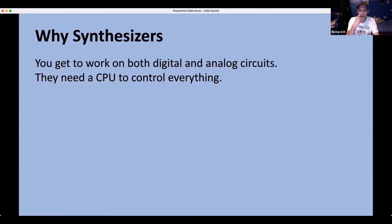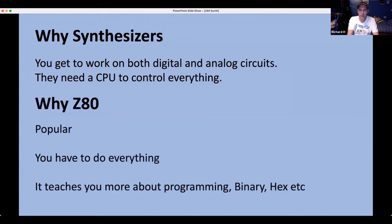First, why he chose synthesizers: you get to work with everything — digital electronics, analog — and of course they need a CPU to control everything, be it a modern microcontroller if you're building one today, or if you want to build it like it used to be, a Z80, 6502, or various other 8-bit CPUs. As for why the Z80 — it's very popular, still quite popular today, there's still a lot of help on the internet, more so than other CPUs of that era.